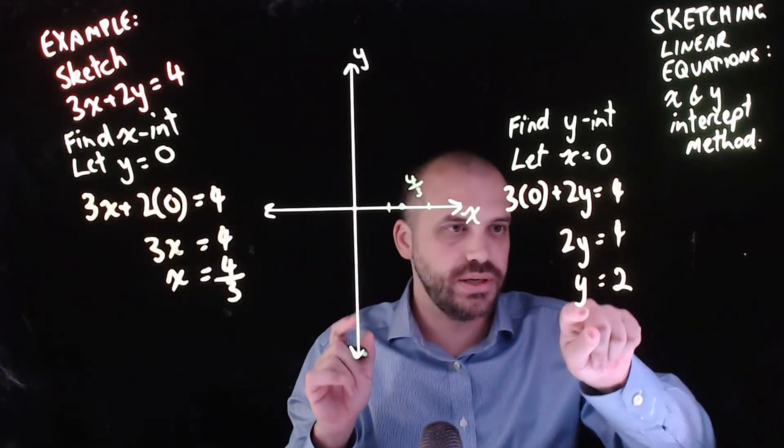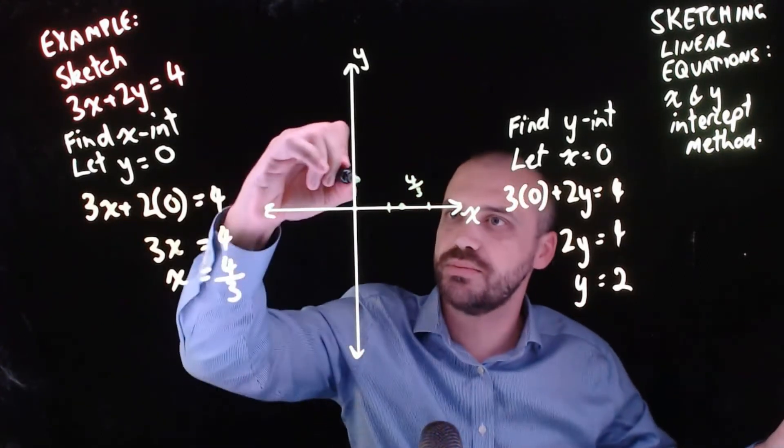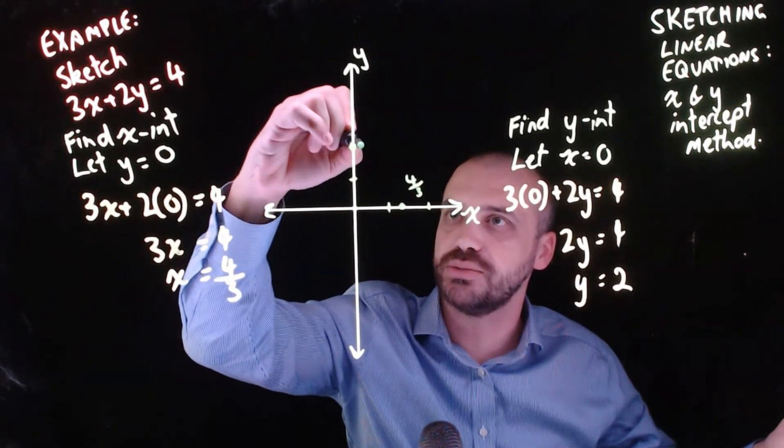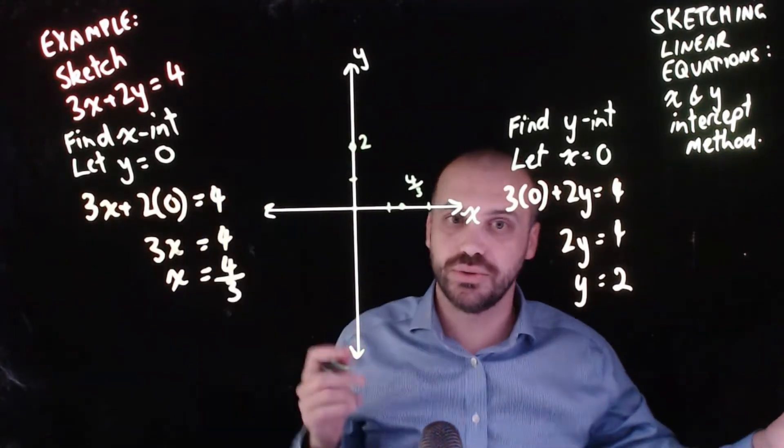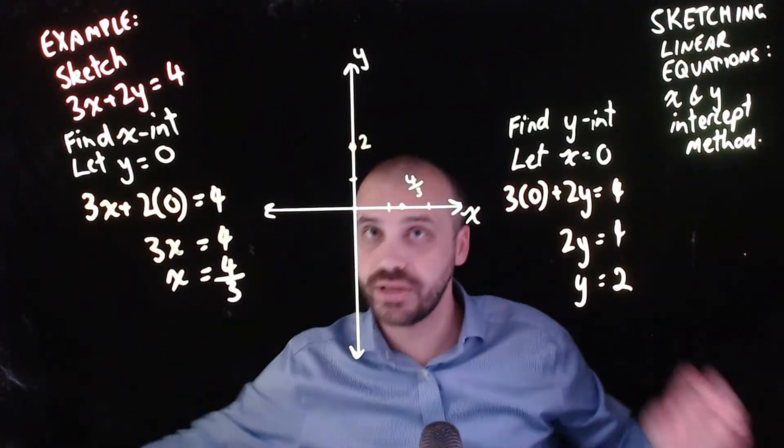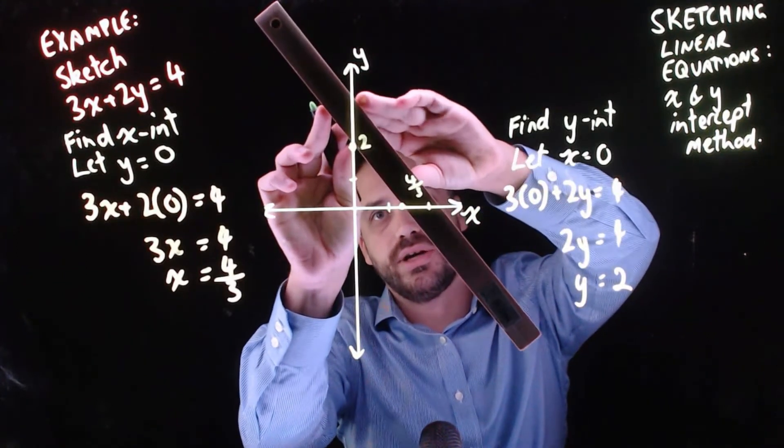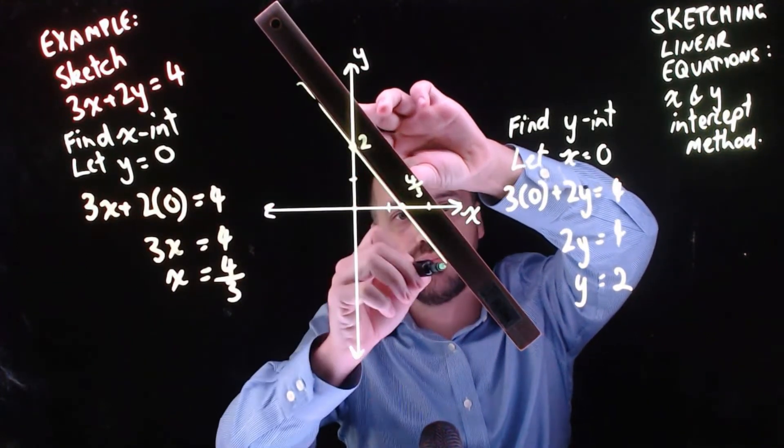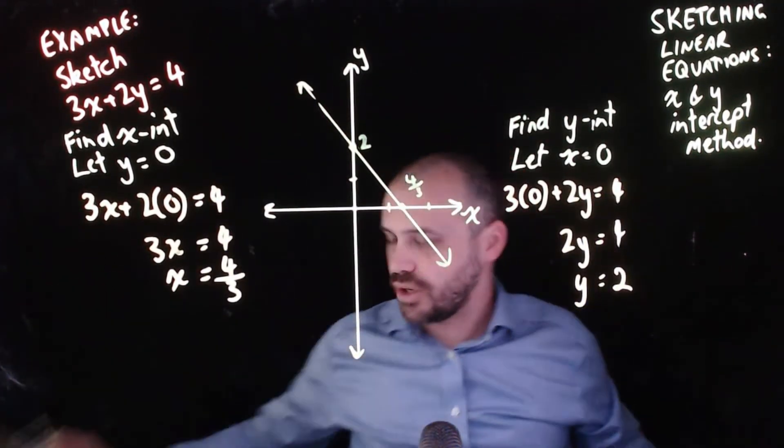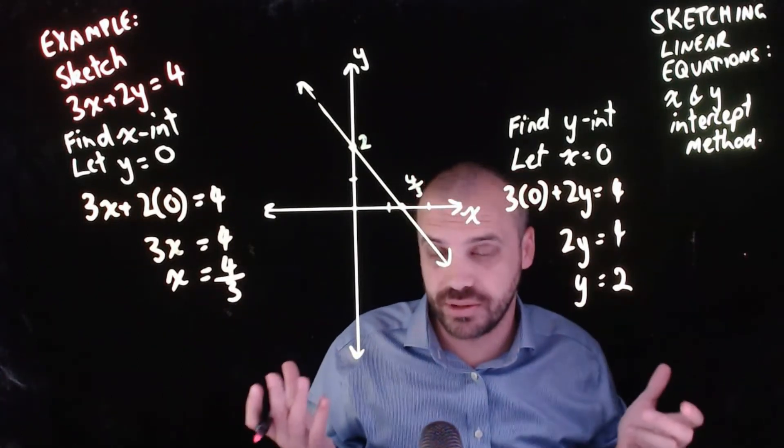This one here, y equals 2. So y intercept at 2 right there, and I'll mark that with the number 2. Now that I have one point here and one point here, I get my ruler out and draw the line through those two points. Arrows going off in both directions. That's really all there is to the x and y intercept method.